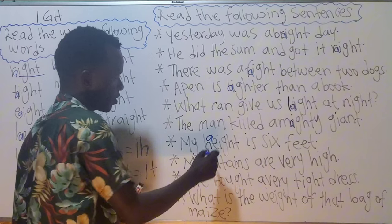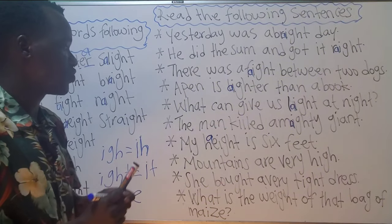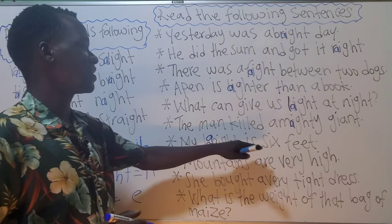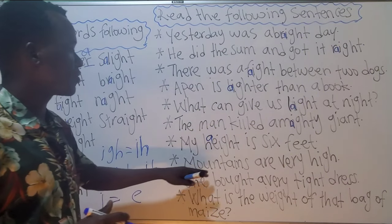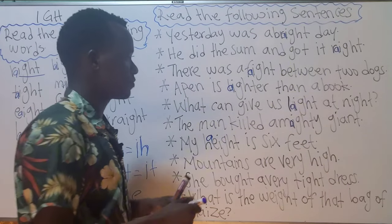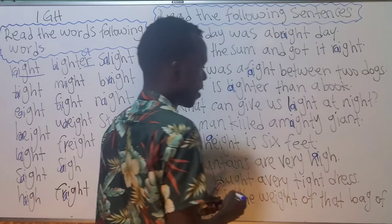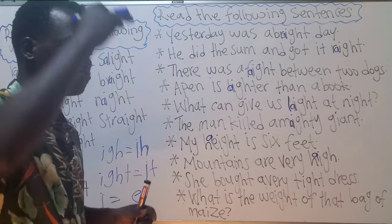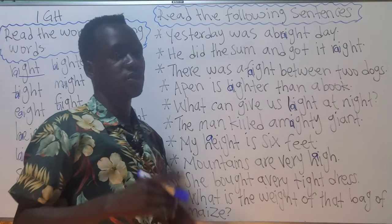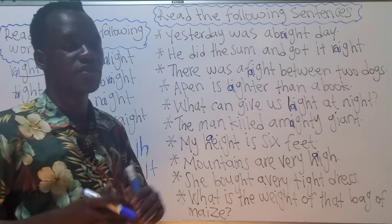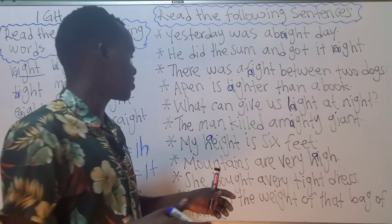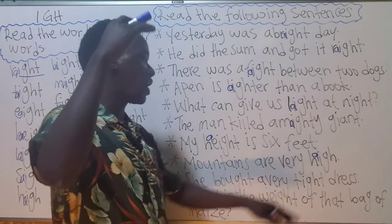Number seven: 'My height is six feet.' Height — invisible A here; when you read it you have to put the A sound there. 'Height' is how tall you are. Number eight: 'Mountains are very high.' High means tall, but you say 'high' for objects and physical features. 'Tall' is used to describe a person, while 'high' is used to describe objects like mountains.